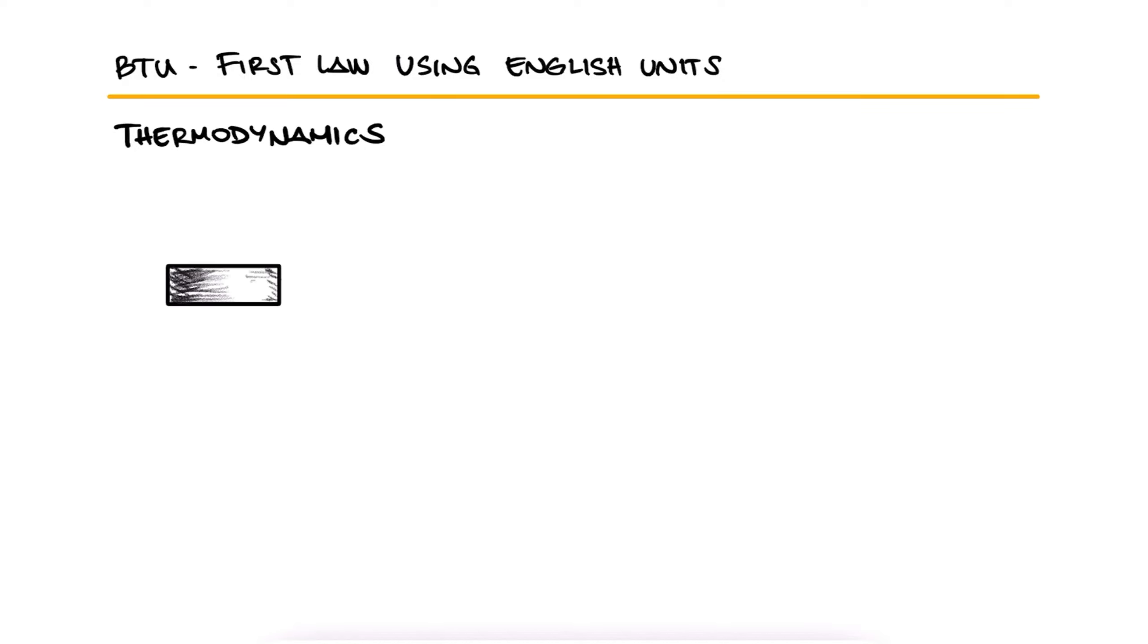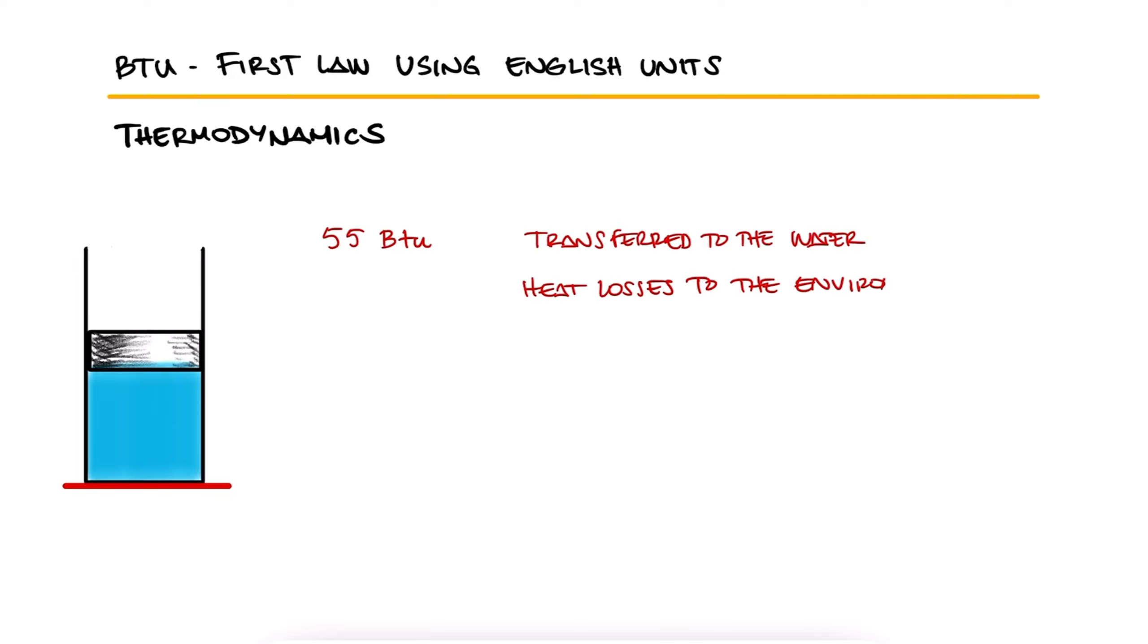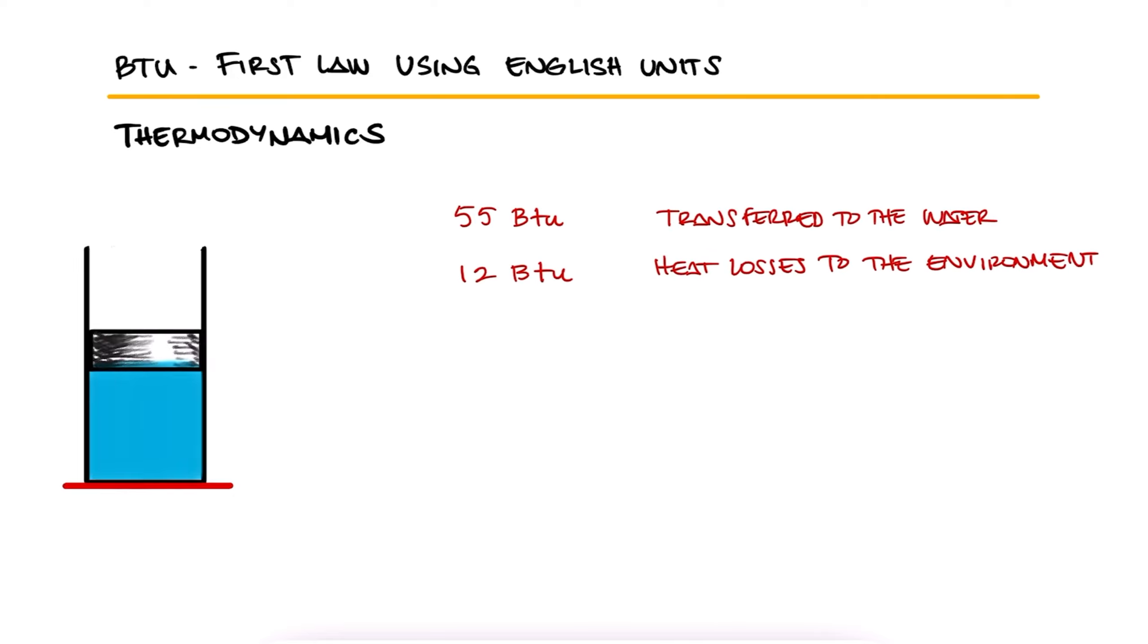A piston cylinder containing water is heated on top of a hot plate. During this process, 55 BTU of heat is transferred to the water, and heat losses to the environment amount to 12 BTU. Due to water evaporating, the piston rises, generating 4000 ft-lbs of work. What is the change in the energy of the water during this process?